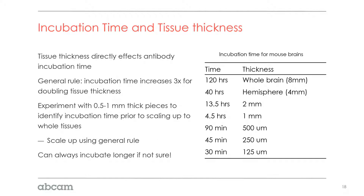Incubation time changes a lot with thickness. For a very thin section of 100 to 125 microns, labeling across the depth can take about 30 minutes. However, for a whole mouse brain or hemisphere, if the label can penetrate across the entire depth, it could take 40 to 120 hours or longer for primary labeling, and secondary labeling could double that time. This is a real advantage of cutting tissue into one- to two-millimeter pieces and processing those instead of attempting to image a whole mouse brain.